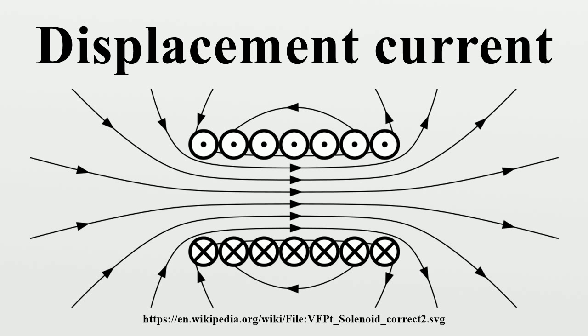Maxwell wrote: This displacement is the commencement of a current. The amount of displacement depends on the nature of the body, and on the electromotive force so that if H is the displacement, R the electromotive force, and D a coefficient depending on the nature of the dielectric, these relations are independent of any theory about the mechanism of dielectrics. But when we find electromotive force producing electric displacement in a dielectric, and when we find the dielectric recovering from its state of electric displacement, we cannot help regarding the phenomena as those of an elastic body, yielding to a pressure and recovering its form when the pressure is removed.